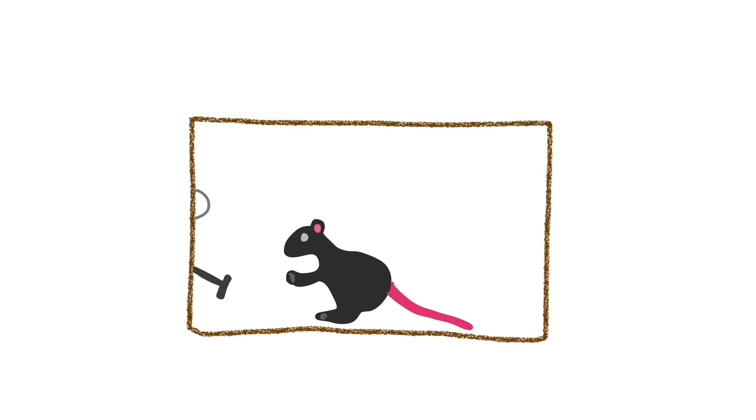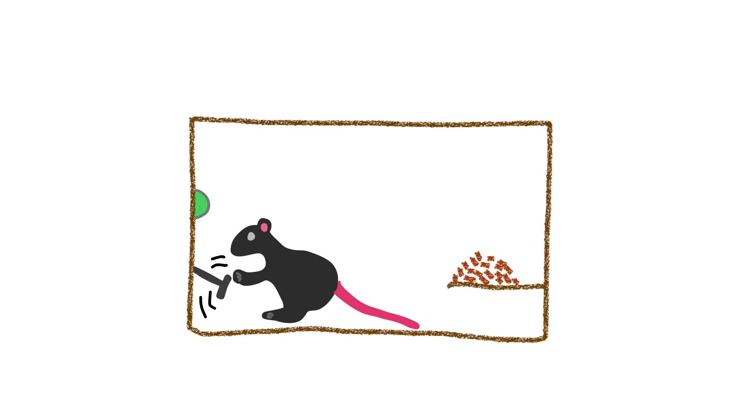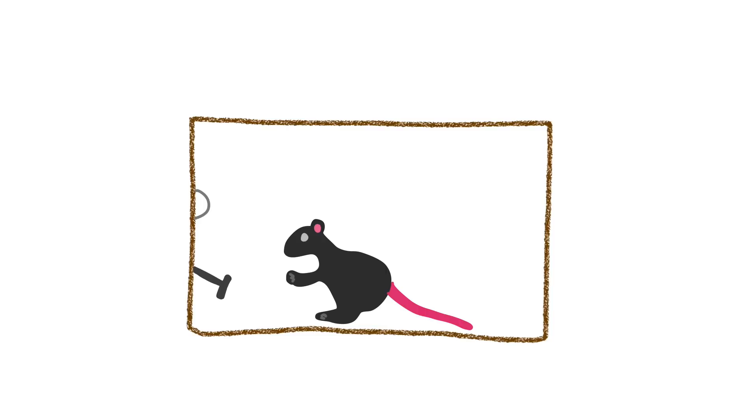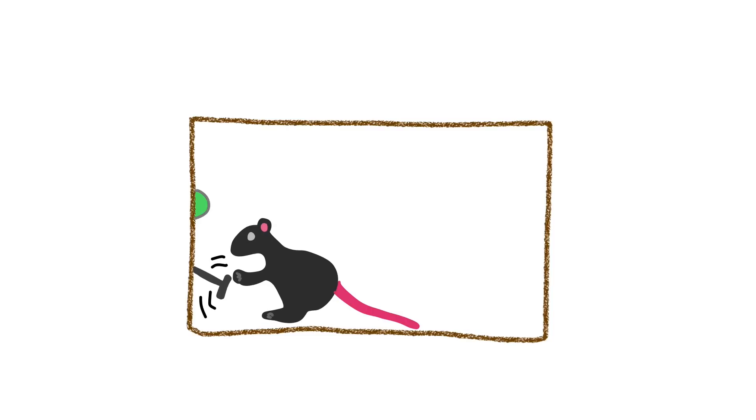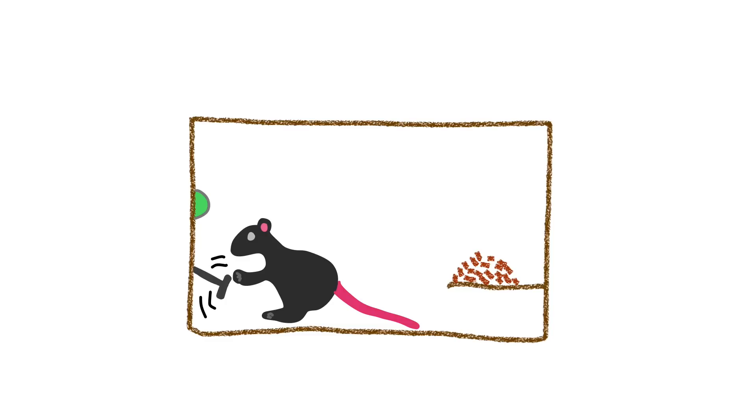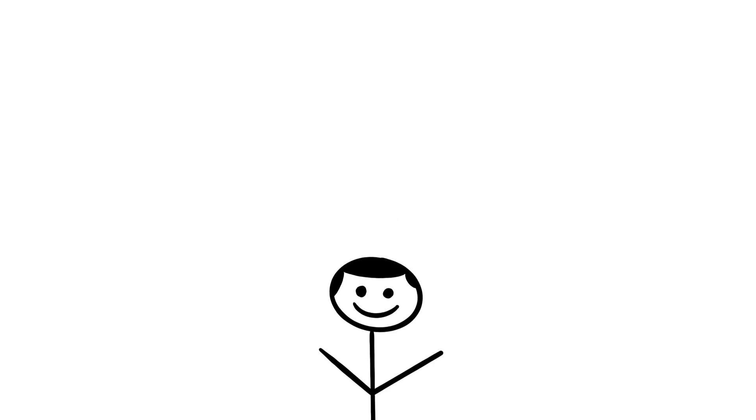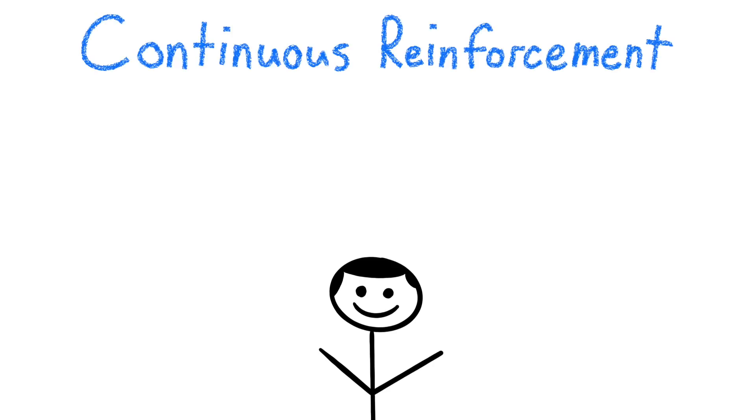For example, Skinner would put a rat in the box, and whenever a rat pulled a lever inside the box, it would be rewarded with a food pellet. Over time, the rat learns that every time it pulls the lever down, it receives a food pellet. The action it performs, the lever push, leads to the outcome—food pellet.